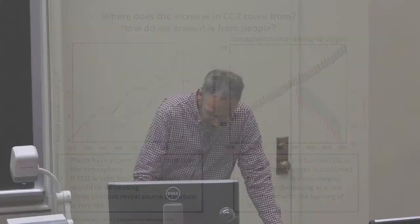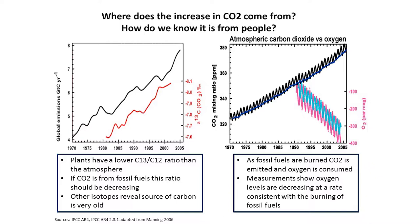The first question we might ask is: how do we know the CO2 is due to anthropogenic activities — how do we know it's been emitted by people? There are a number of evidences for this. If you look at the isotopic signature of the increase in CO2, it shows the delta-13 carbon — plants have a lower C13 to C12 ratio than the atmosphere. So if CO2 is from fossil fuels, essentially old decayed plants, then we would expect this ratio to decrease, and that's exactly what we see. As CO2 has gone up, the ratio of delta-13 carbon has decreased, which suggests that this carbon is derived from plants.